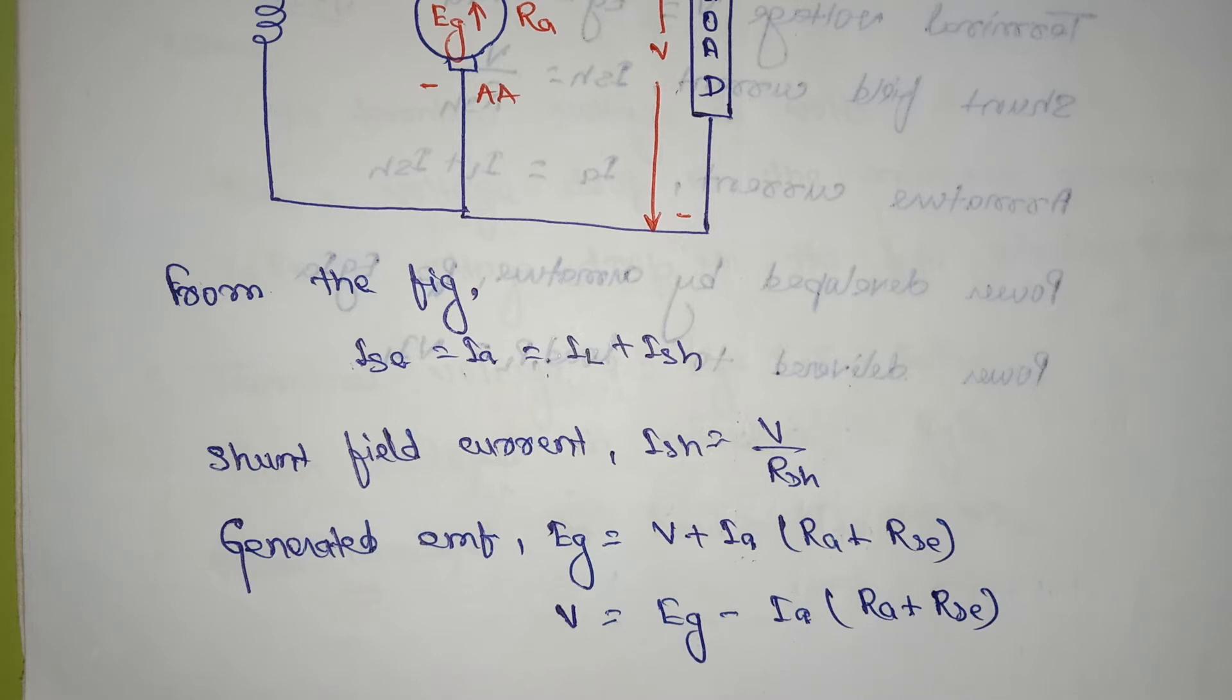The power developed in the armature is equal to P is equal to Eg into Ia, and power developed to the load is equal to PL is equal to V into IL.